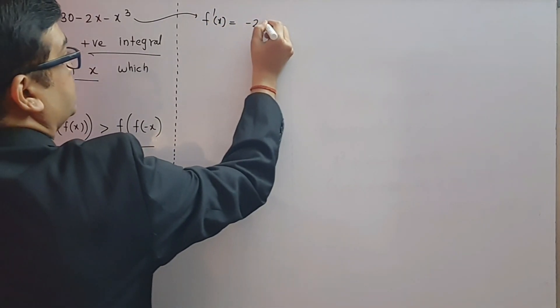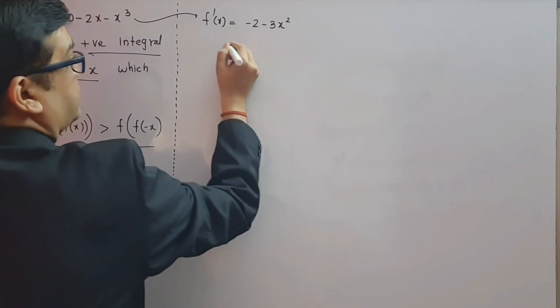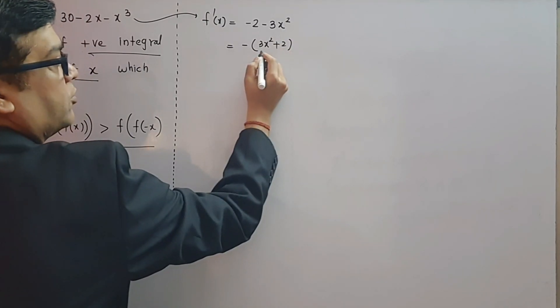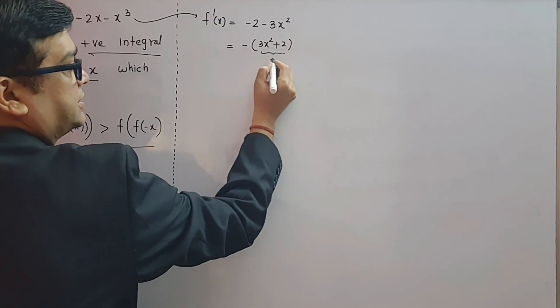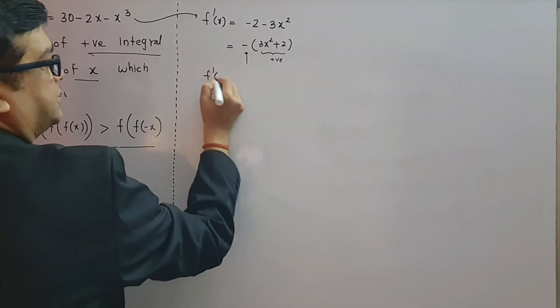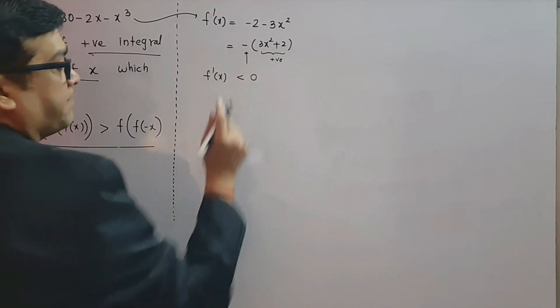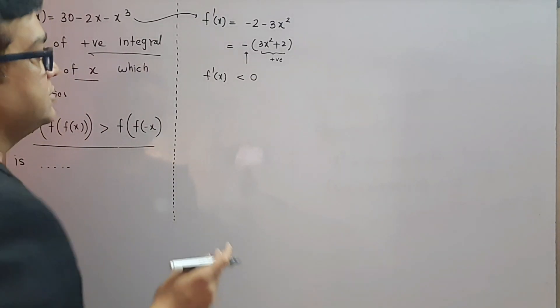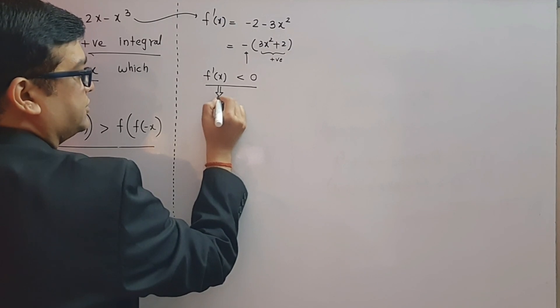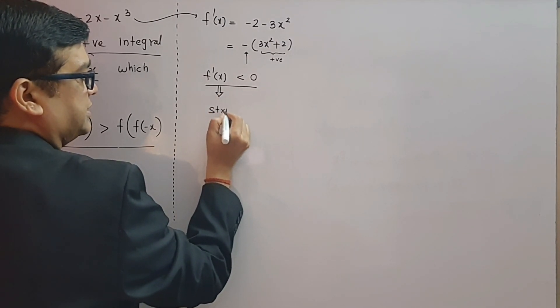So if I find out its derivative, it is going to be -2 - 3x², which is negative of (3x² + 2). Overall this particular quantity is positive and that gets multiplied by negative sign, that means the derivative of this function is negative, less than 0.